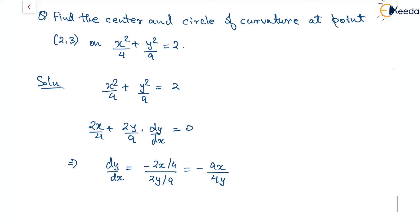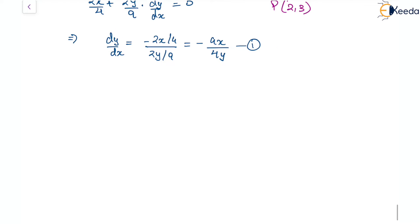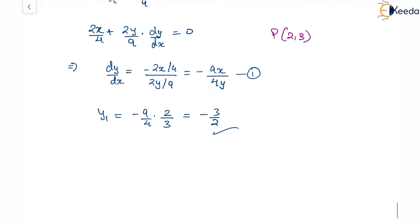Since we are looking for the center and circle of curvature at the point (2,3), our point p is (2,3). Using this first derivative, y1 at point p is: minus 9/4 times x=2 divided by y=3, which comes out to be minus 3/2, or minus 1.5.